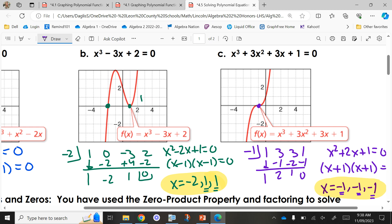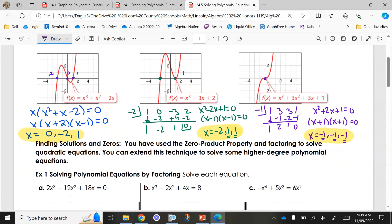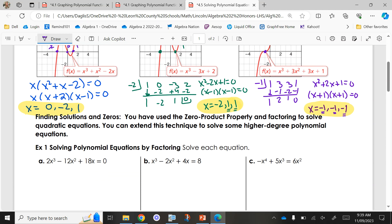So this is previous knowledge. I picked one of the x-intercepts to test. Can you do it without a graph? How would you factor that top one without a graph? It's a cubic, so you can't use quadratic formula. This one, you need the graph. So let's explore more. Finding solutions and zeros. We have used the zero product property and factoring to solve quadratic equations. You can extend this technique to solve some higher degree polynomial equations. So we're tying in what we just did, but now we're going to take it one step further and solve for x.